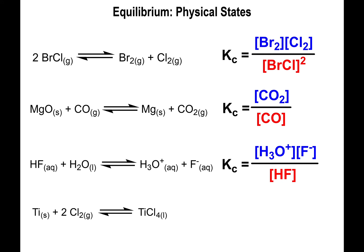Finally: Ti(s) + 2 Cl₂(g) → TiCl₄(l). In this case nothing on the product side is aq or gas, so there are no molecules for the product portion of the expression. You cannot put zero in the numerator — if you write zero, the equilibrium constant automatically becomes zero.